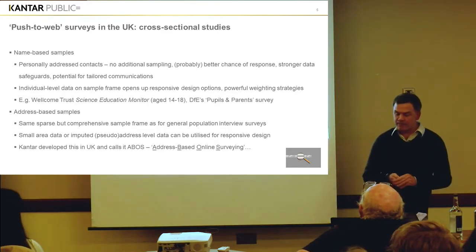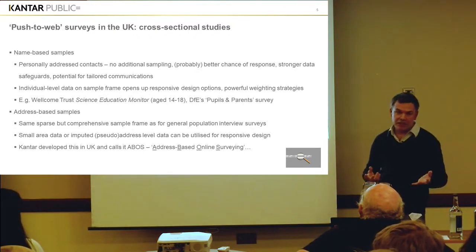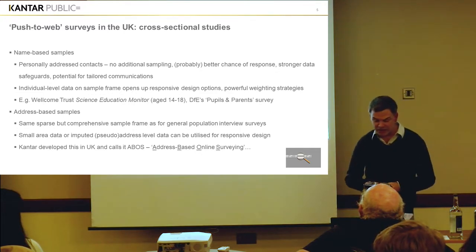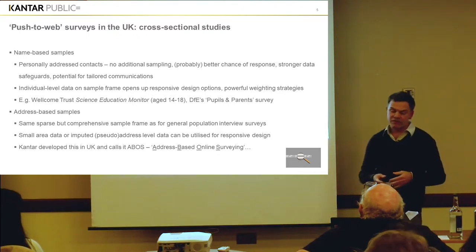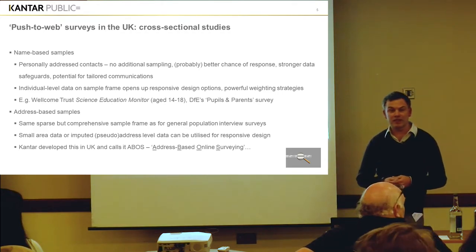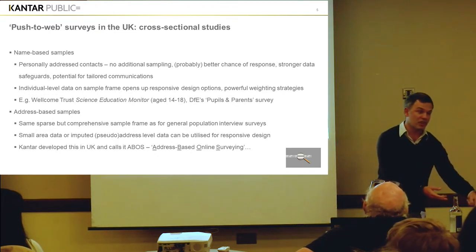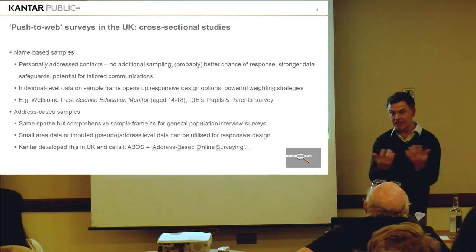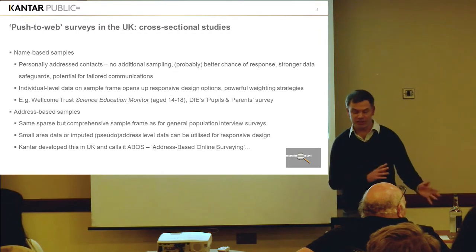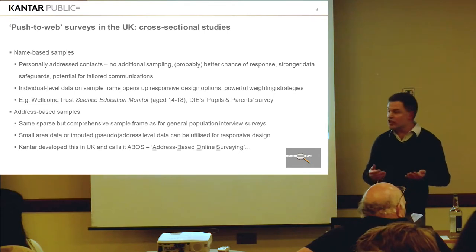Cross-sectional studies. There are two types. First are name-based samples, which are great. Pat gave a good example with the science education monitor. Another similar design was with the DfE on a pupil and parent survey — again sampled from the National Pupil Database. Letters were written to parents, parents completed a survey, and then the sampled child also completed it. The data was put together with confidentiality safeguards separating the two. These are great cases because there's no additional sampling required.